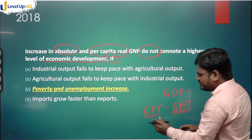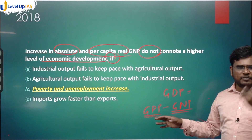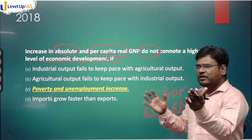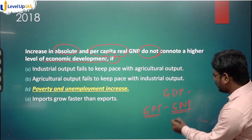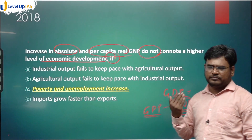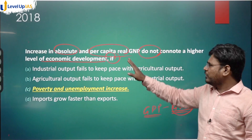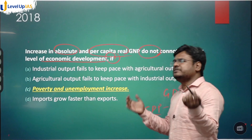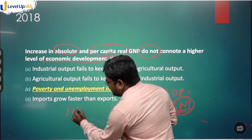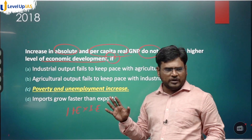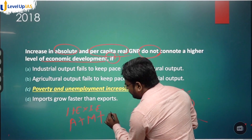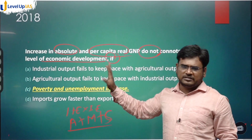GDP is gross domestic product — it counts everything produced domestically. GNP is gross national product — if a Nepali person earns in India and takes money back, or an Indian earns in Nepal and brings money to India, those additions and subtractions give GNP. GNP and GDP are nearly the same, just with added external income. GDP can be calculated by adding agriculture GDP, manufacturing GDP, and services GDP, or via the income-expenditure formula involving imports and exports.